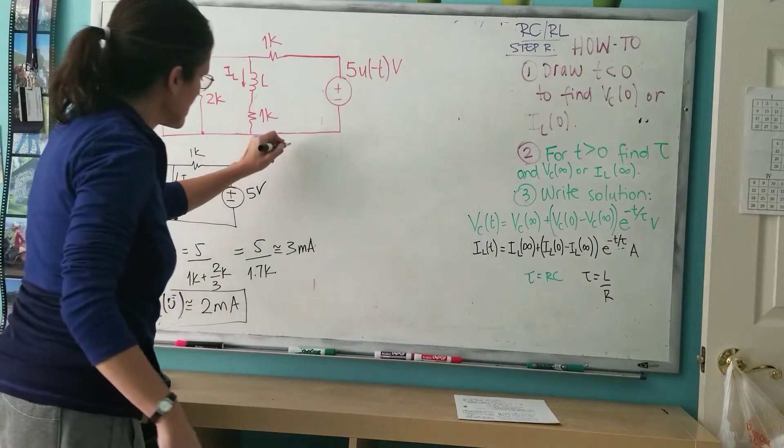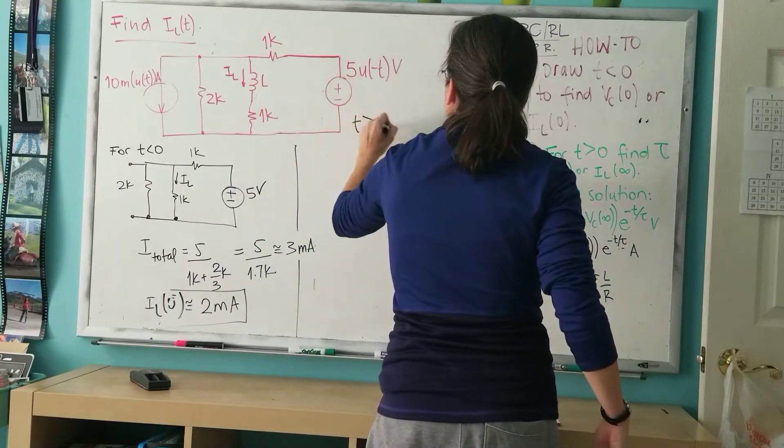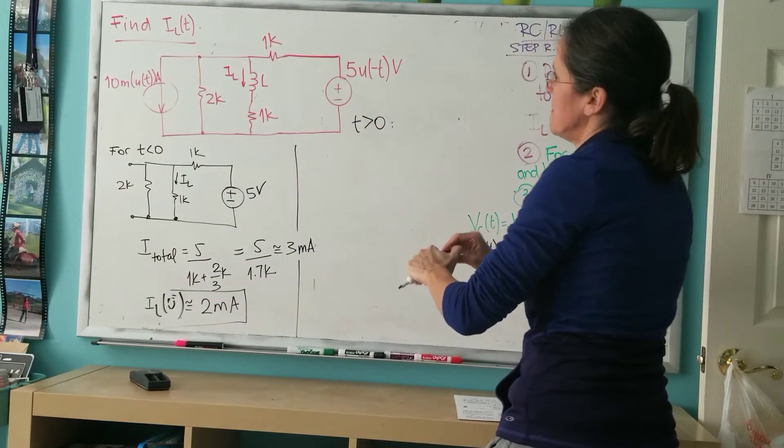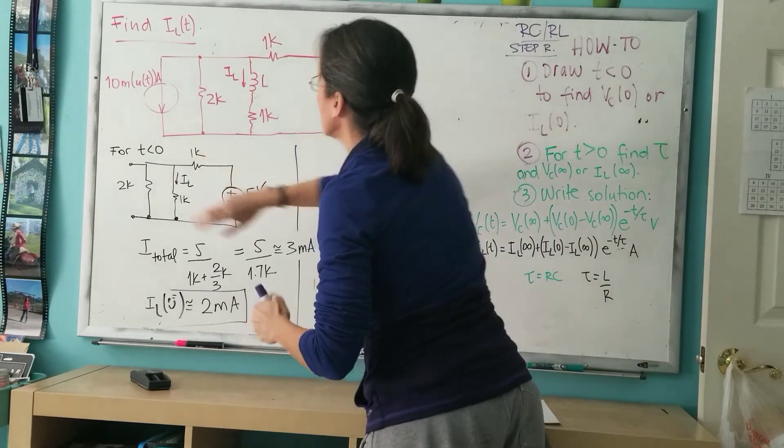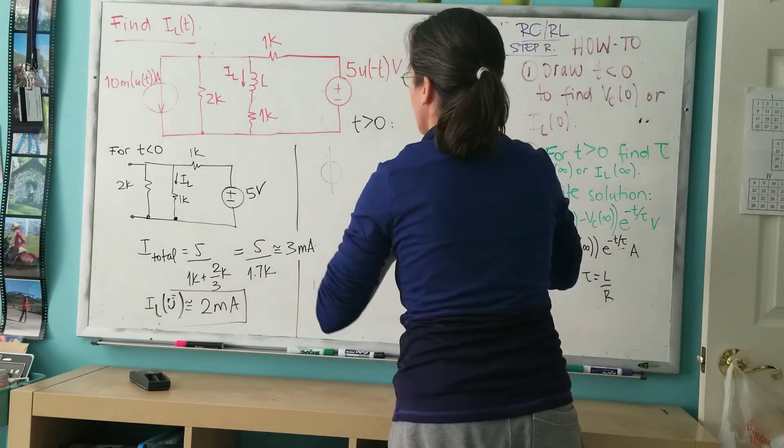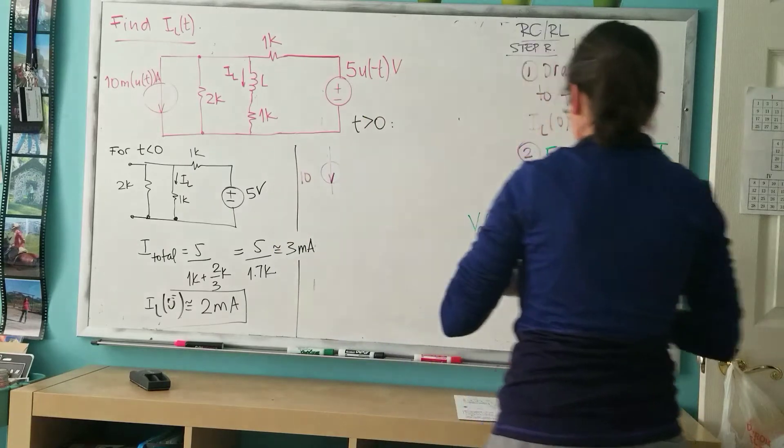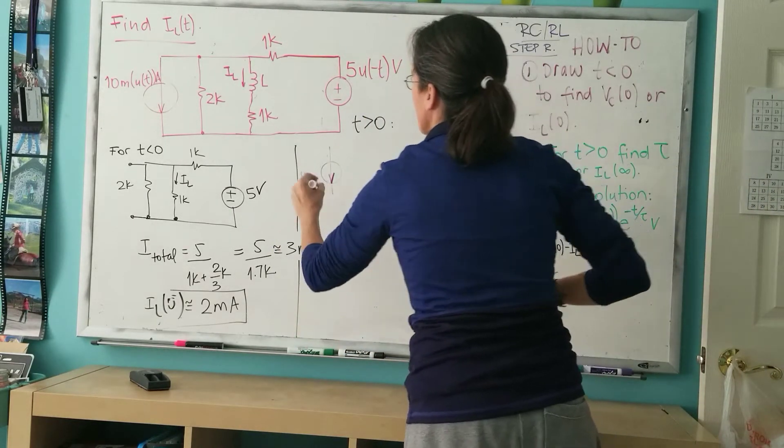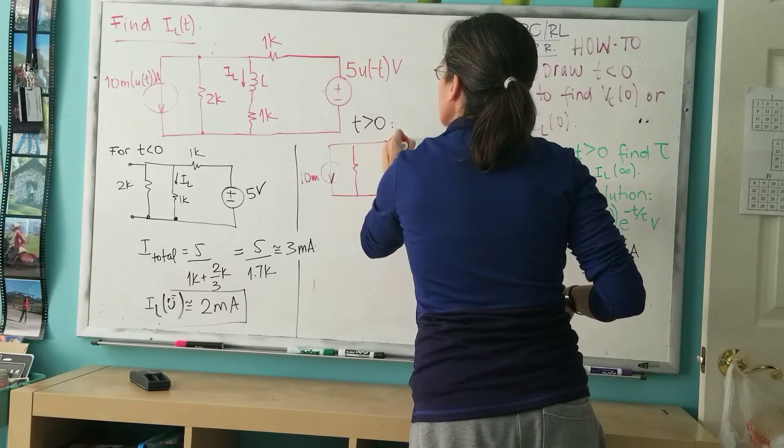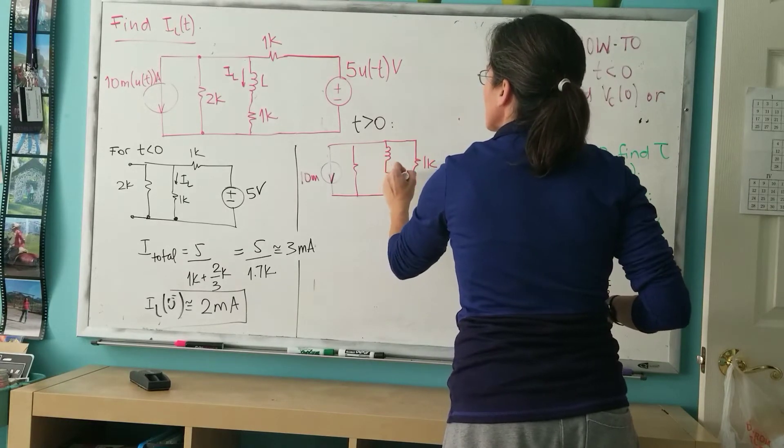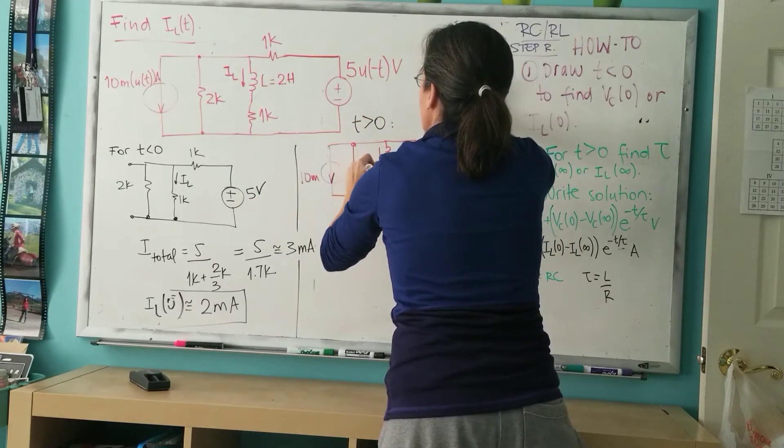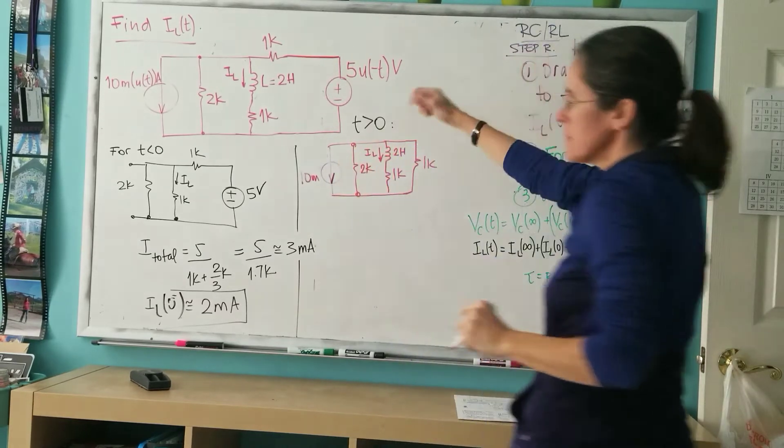For t larger than zero, I'm going to have a different circuit. I do expect you to draw these. In this case, this turns off, which means it shorts, and this turns on. So 10 milli, 2k. Now I want to draw the inductor. This is the 1k, this is the 1k, this is the inductor. It looks like the inductor doesn't have a value here. 2k. And the IL is still going down. I'm copying it from the top circuit.